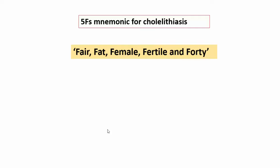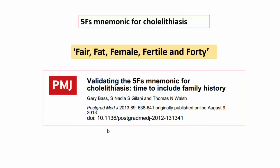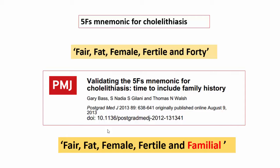'Forty' referred to individuals in their 40s having more propensity for gallstones, but an article on validating the five F's mnemonic found that the age group does not actually favor the 40s — gallstones can be found in any age group, and are more common in elderly individuals. Significantly, family history was missing from the mnemonic. Since first-degree relatives of gallstone patients are at higher risk, the '40' is now replaced with 'Familial.' The updated five F's are: Fair, Fat, Female, Fertile, and Familial.